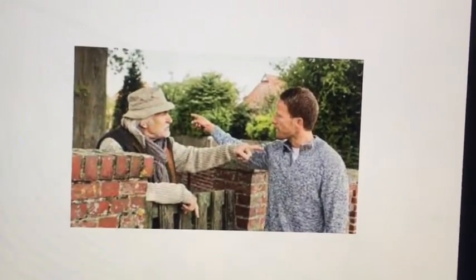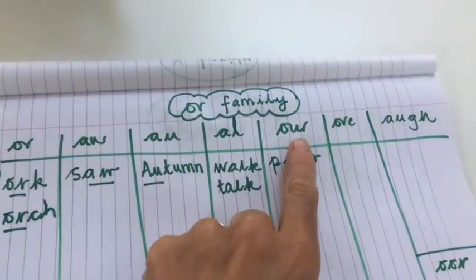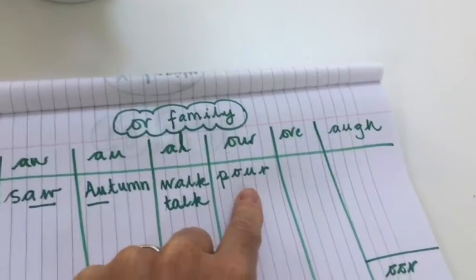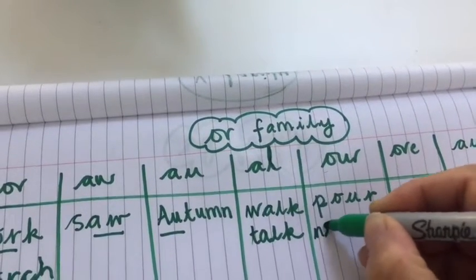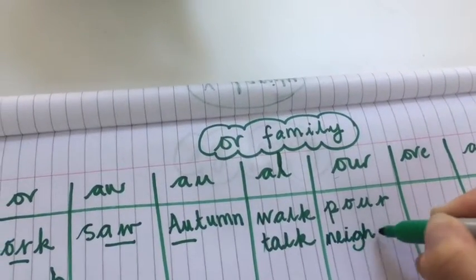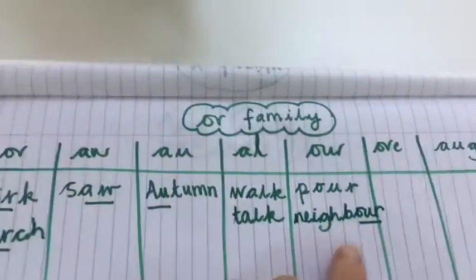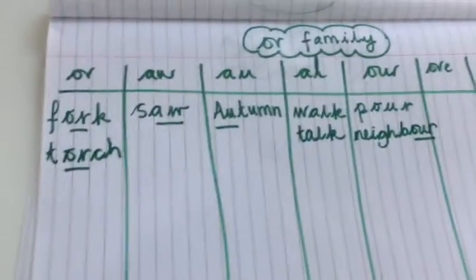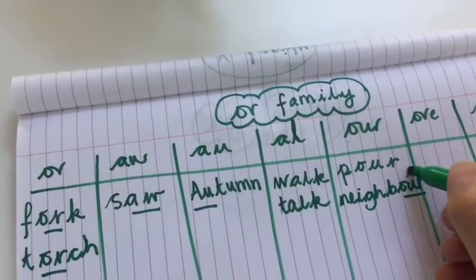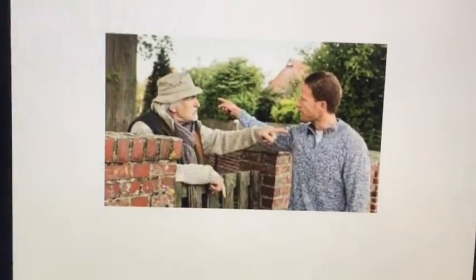These two look like they are neighbours. Now 'neighbour' is going to be a challenge word. You can hear the 'or' sound at the end of this word. It's going to go in this column — the 'our' spelling as in poor and neighbour. We usually put a little star above challenge words just so we know. And those two are neighbours!